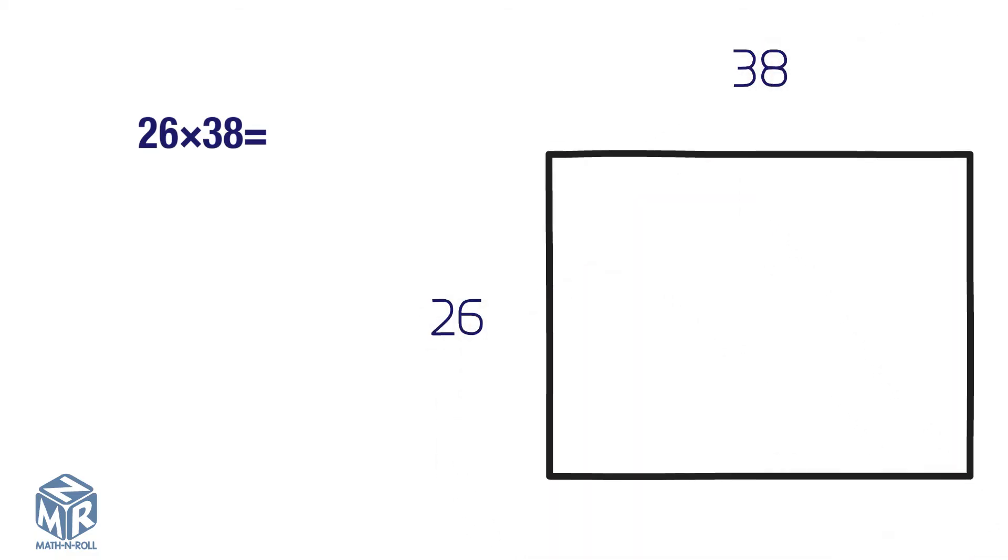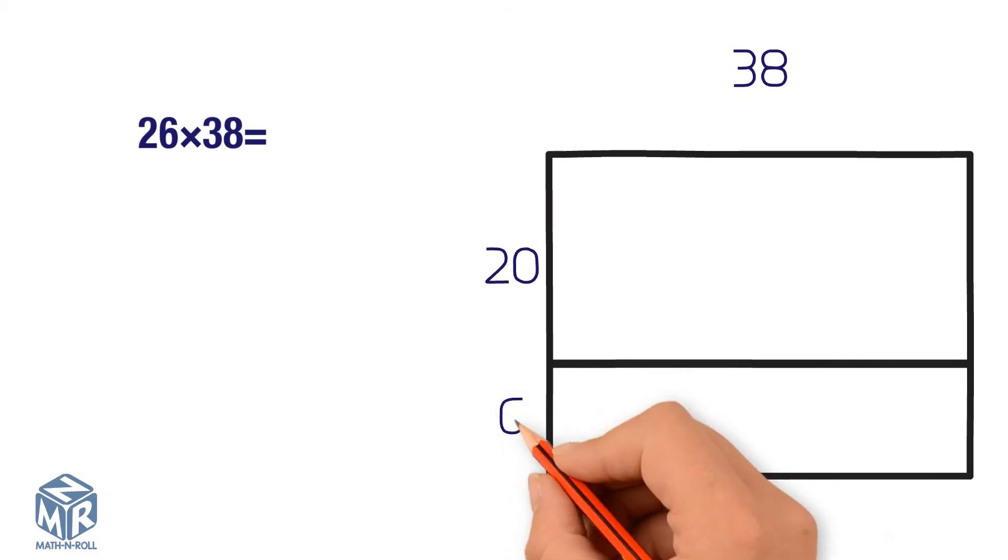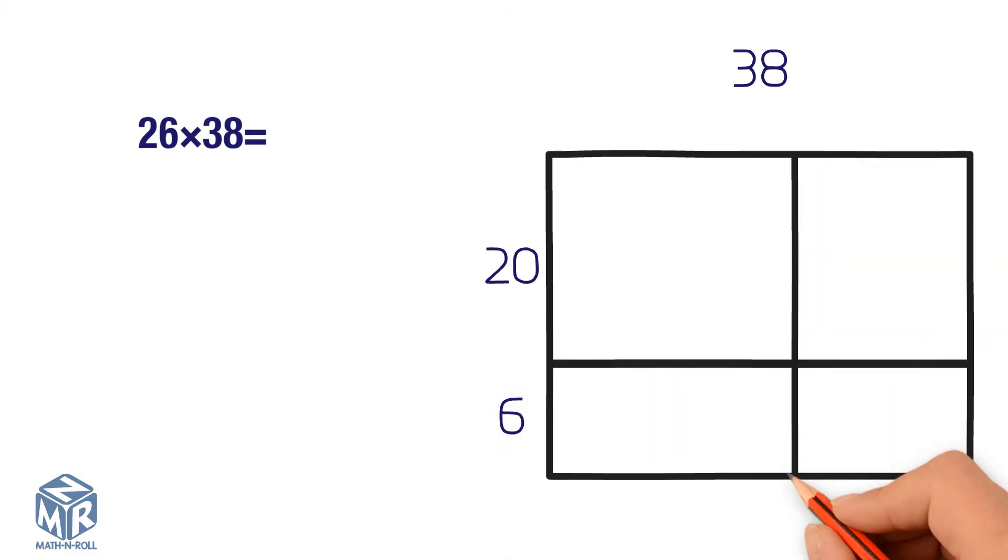Break apart the factors into tens and ones. Divide the area model into four smaller rectangles to show the factors. We break apart 26 into 20 and 6. We break apart 38 into 30 and 8.